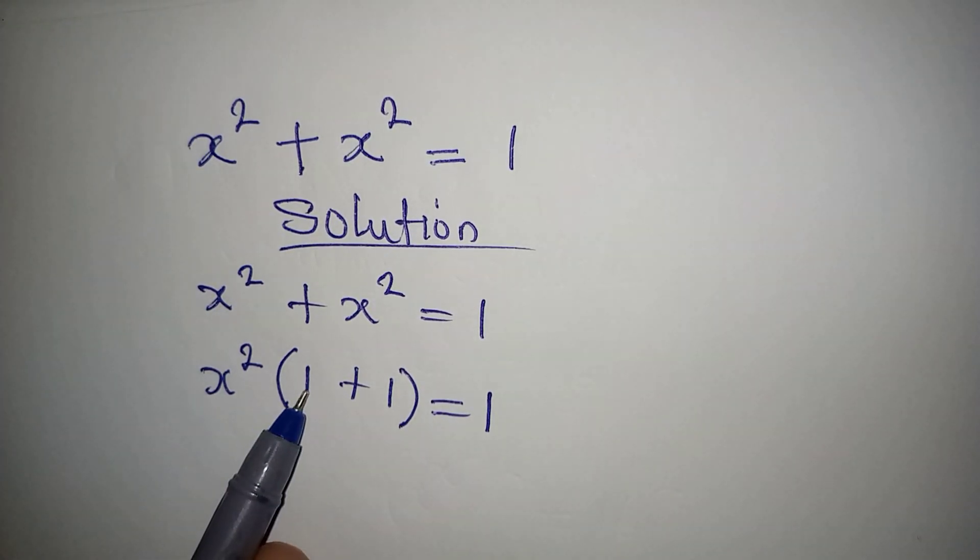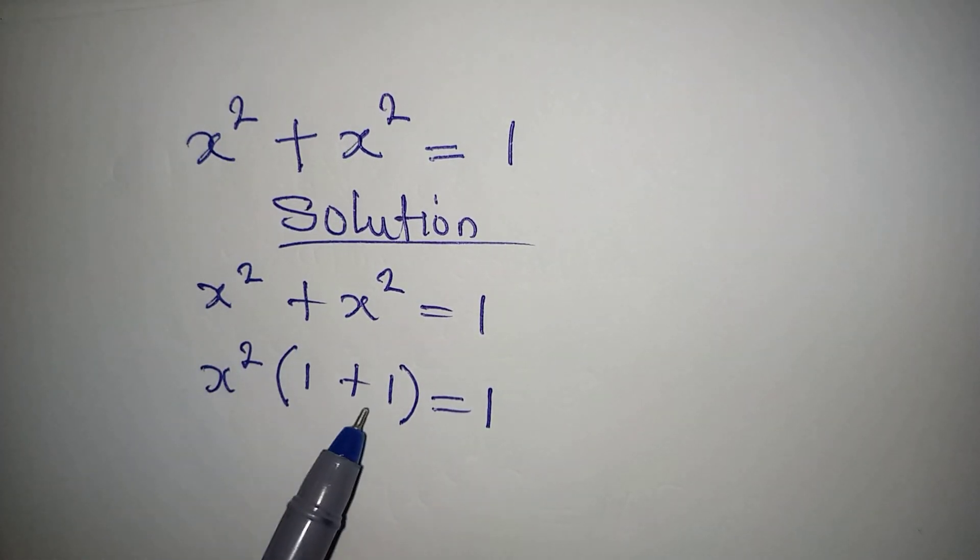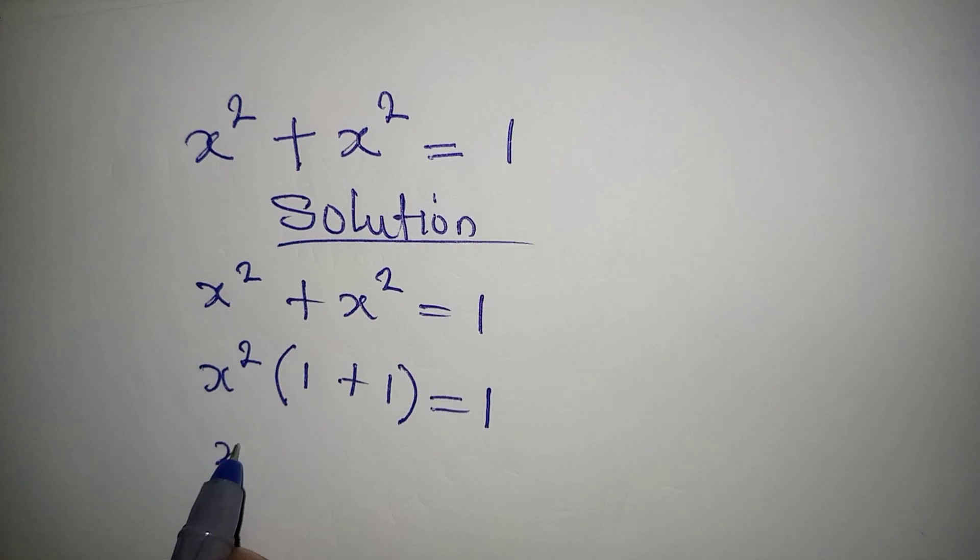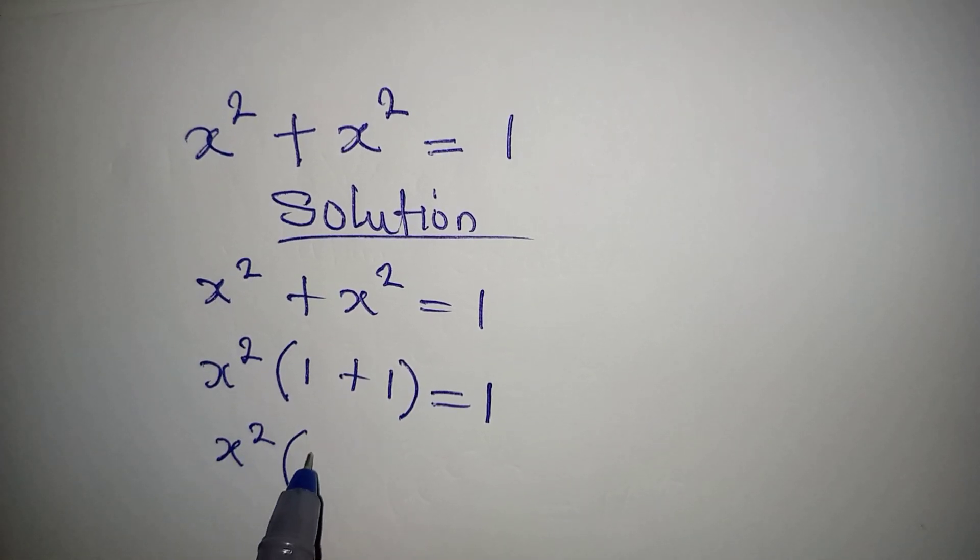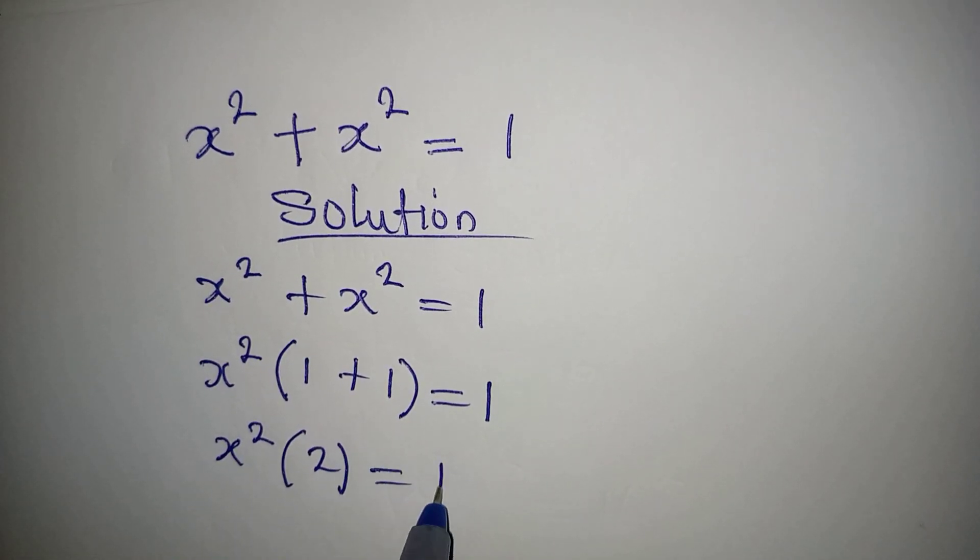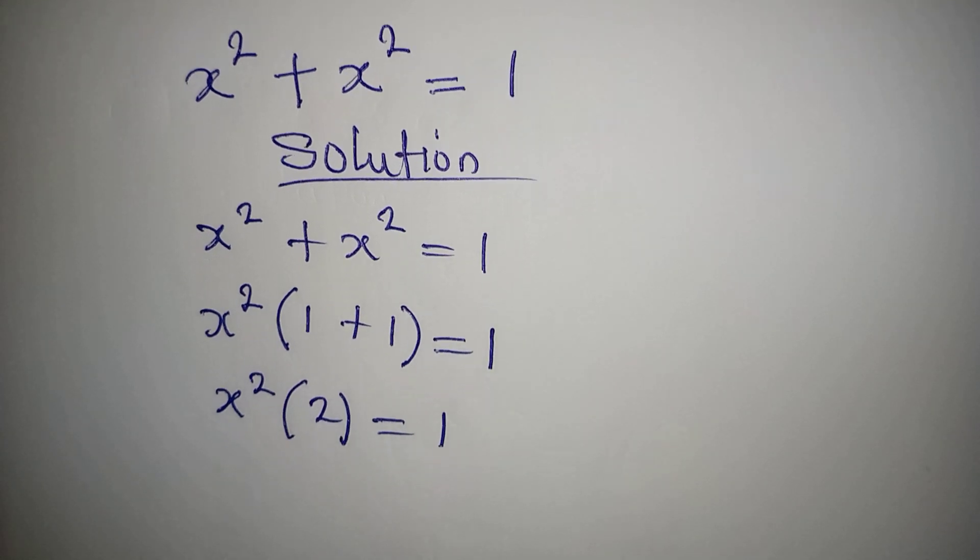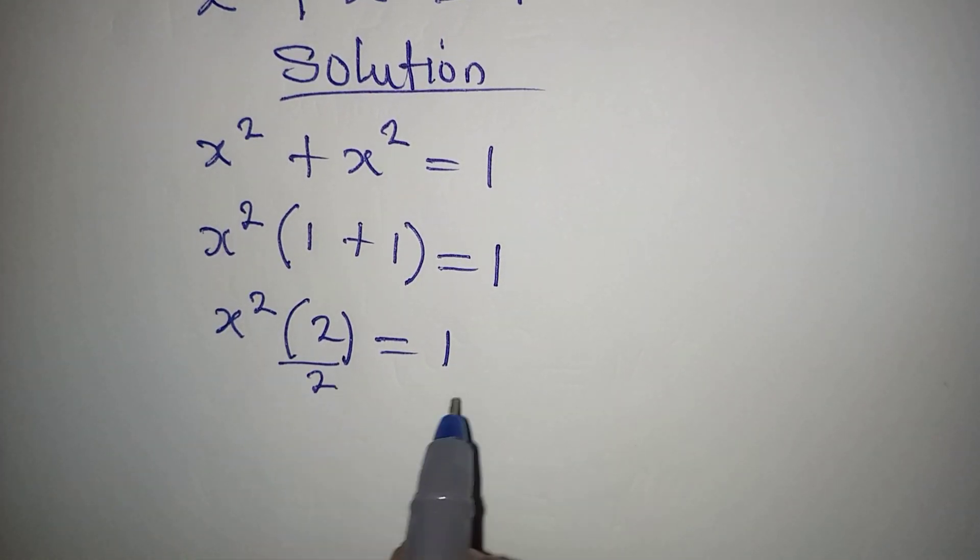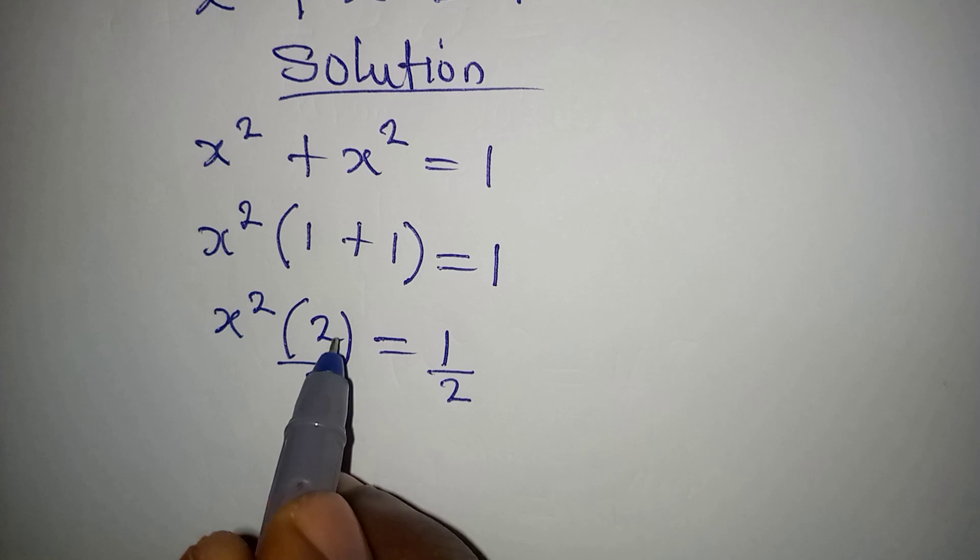x squared divided by x squared is 1, x squared divided by x squared is 1, so that we have x squared into 2 is equal to 1. From here, divide both sides by 2. Divide this by 2, this and this will be gone.